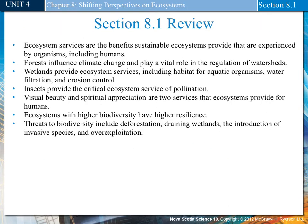Section 8.1 review. Ecosystem services are the benefits sustainable ecosystems provide that are experienced by organisms, including humans. Forests influence climate change and play a vital role in the regulation of watersheds. Wetlands provide ecosystem services including habitat for aquatic organisms, water filtration, and erosion control. Insects provide the critical ecosystem service of pollination. Visual beauty and spiritual appreciation are two services ecosystems provide for humans. Ecosystems with higher biodiversity have higher resilience. Threats to biodiversity include deforestation, draining wetlands, the introduction of invasive species, and over-exploitation.